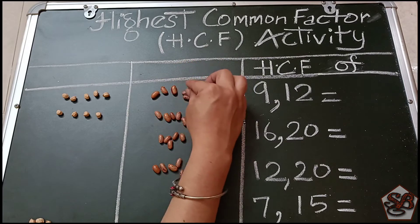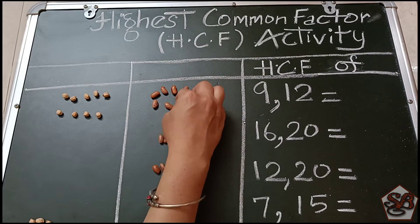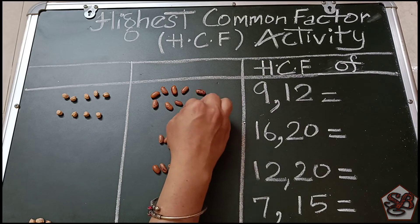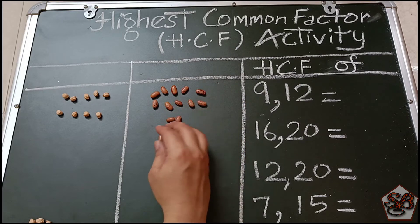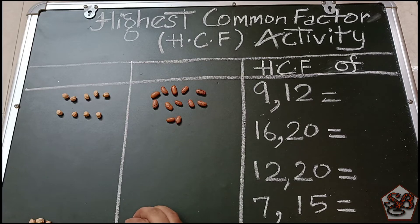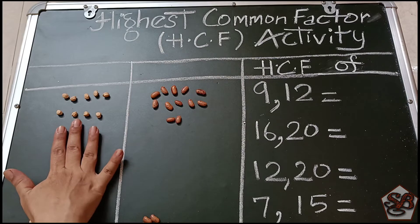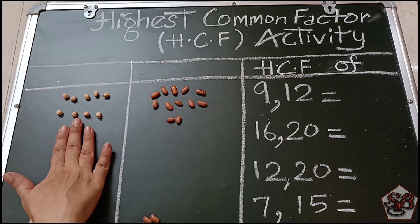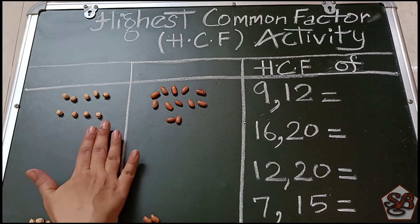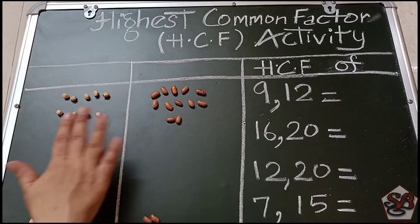Now we also count out 12 seeds: 1, 2, 3, 4, 5, 6, 7, 8, 9, 10, 11, and 12. The rest I'll keep aside. So now, this is 9 and this is 12. The purpose is that we have to find equal numbers in each group.